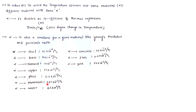In alphabetical order: A for aluminium, 23.1 — highest. Second highest, B for brass, 19. Third highest, copper, 17. Then concrete and steel at 12. Diamond is 1 — the lowest.